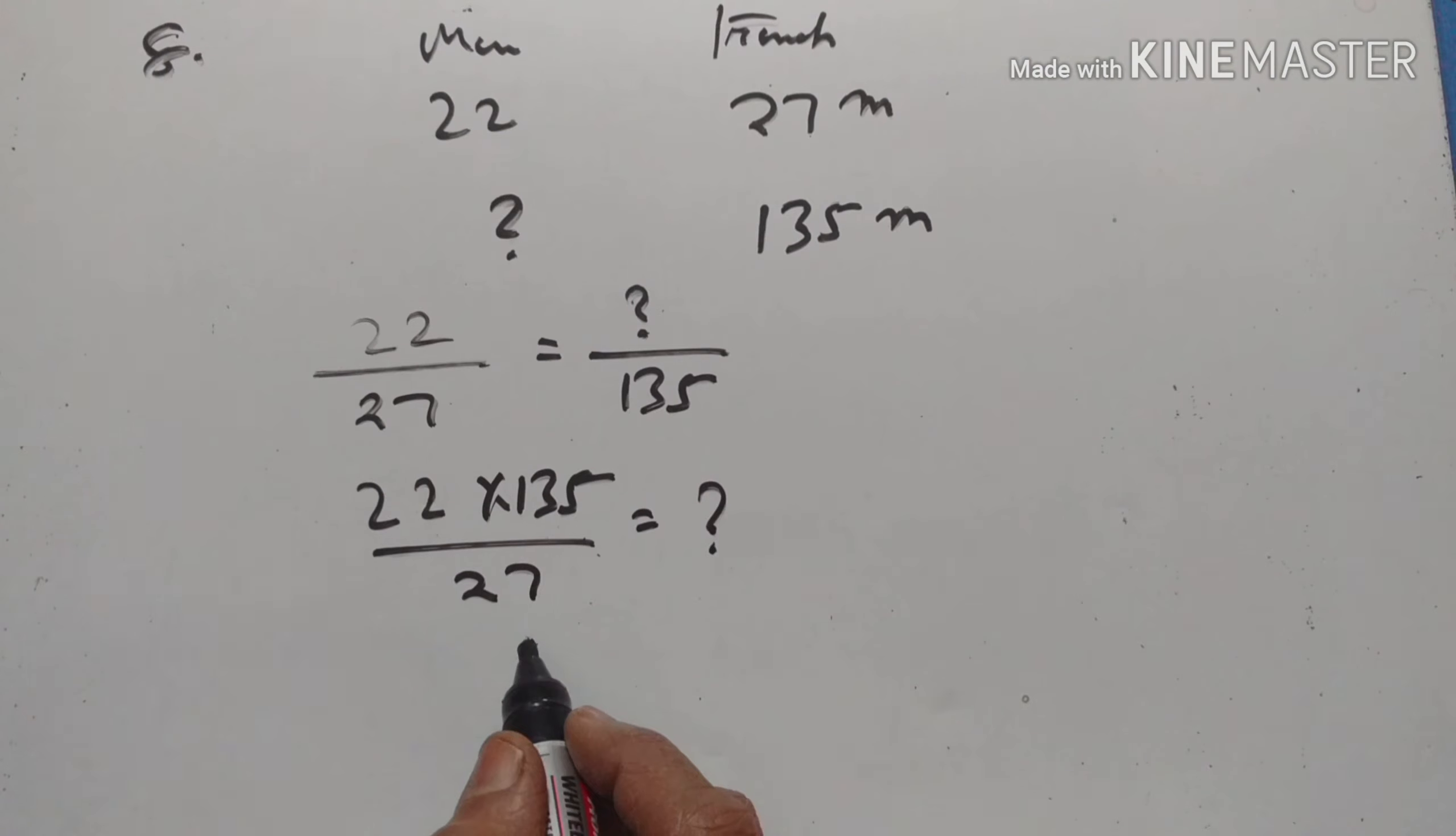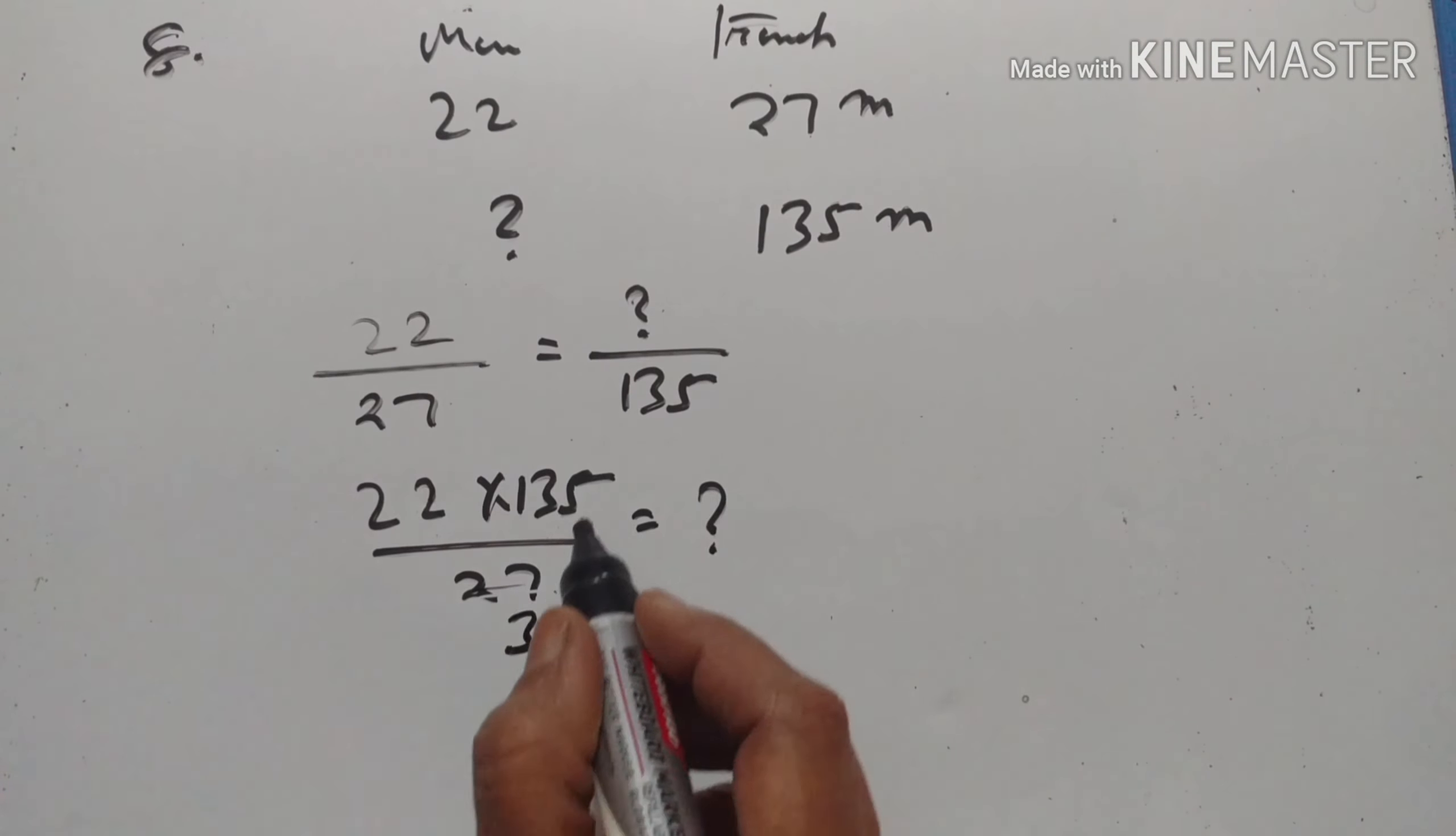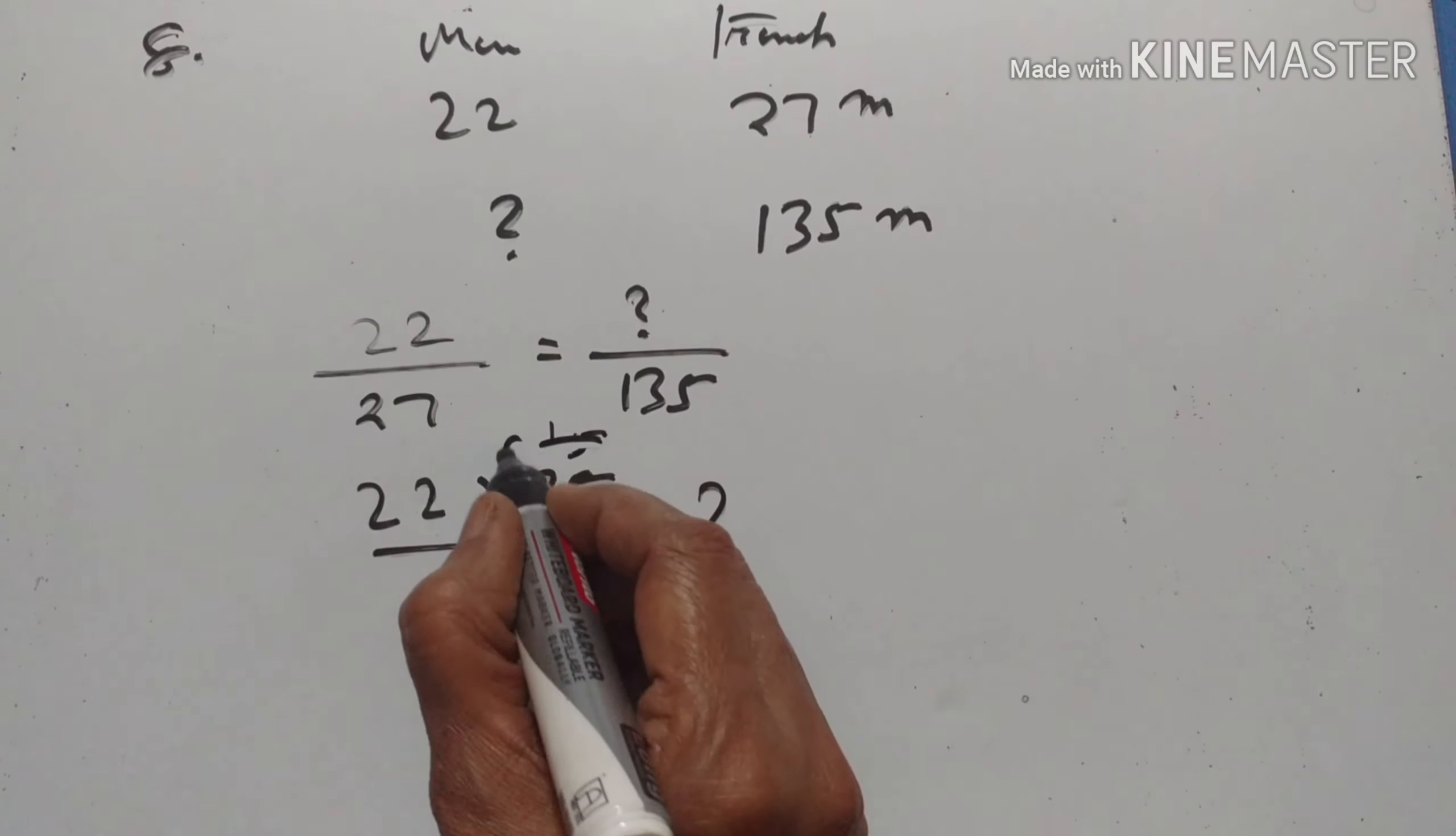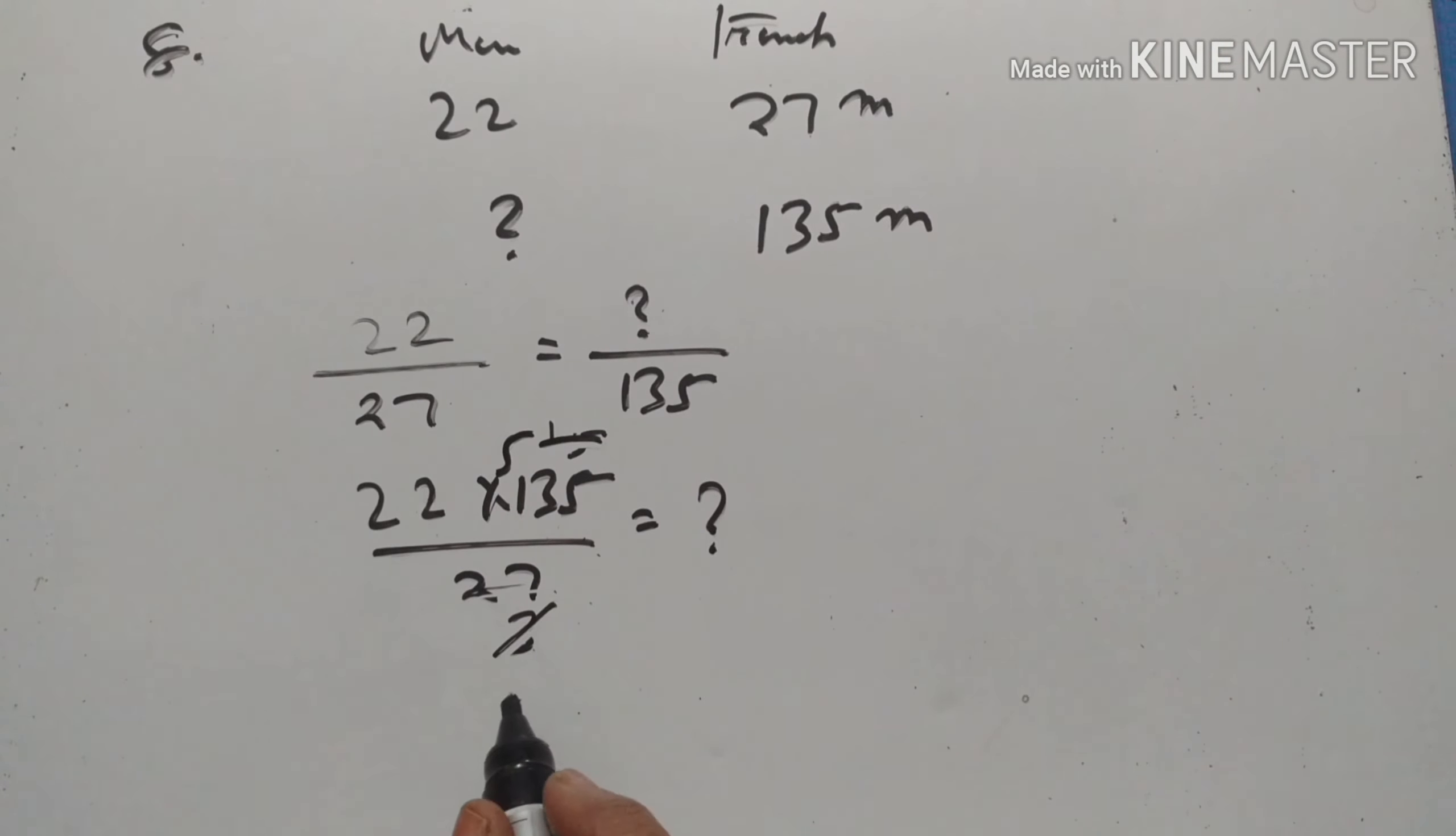So this is equal to 9 threes are 27, 9 ones are 9, 4 remains, 9 fives are 45, 3 ones are 3 fives are. 5 into 22 is equal to 110 men are needed to dig the 135 meter long trench.